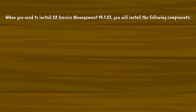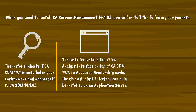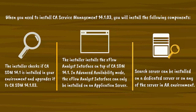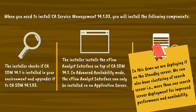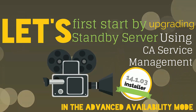When you install CASDM 14.1.03, the following components are installed. The installer checks if CASDM 14.1 is installed in your environment and upgrades it to CASDM 14.1.03. The installer also installs the Xflow Analyst Interface on top of CASDM 14.1. In Advanced Availability mode, the Xflow Analyst Interface can only be installed on an application server. Search Server can be installed on a dedicated server or on any server in the AA environment. In this demo, we are deploying it on the standby server. We can also have clustering of Search Server — more than one Search Server deployment — for improved performance and availability. Let us first start by upgrading the standby server using CA Service Management 14.1.03 installer in Advanced Availability mode.